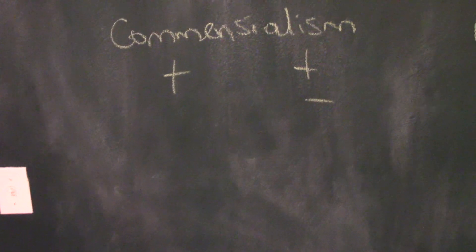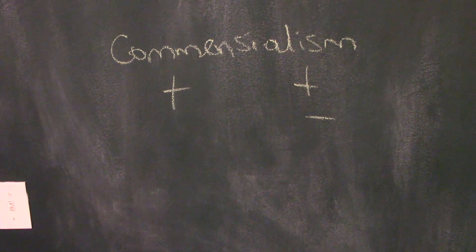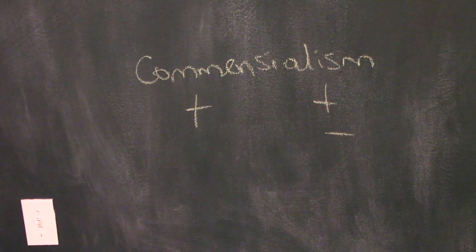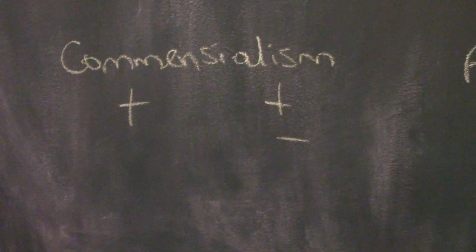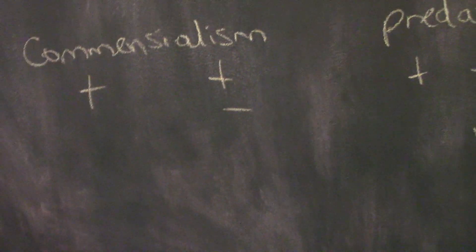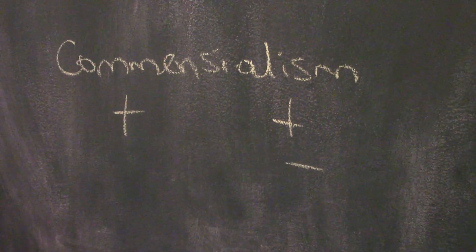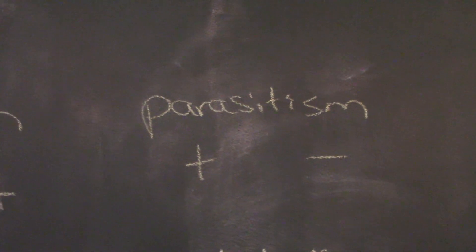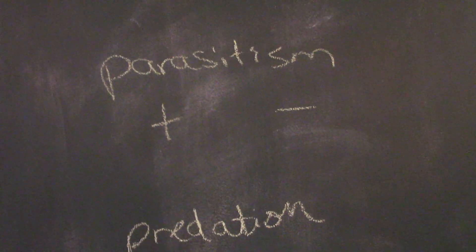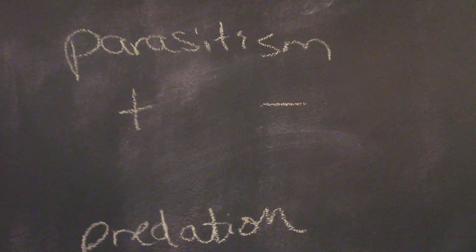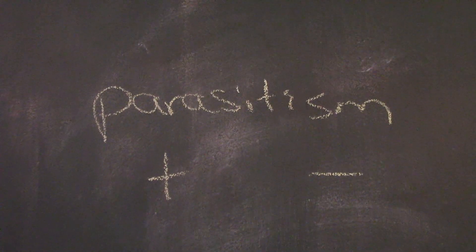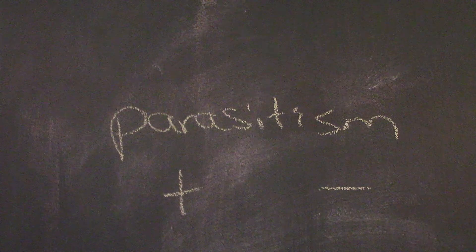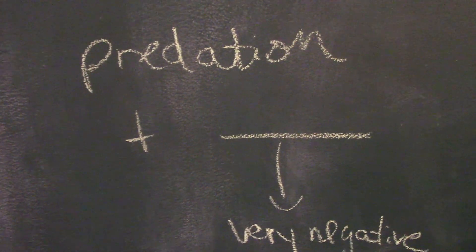Commensalism is where one organism benefits while another is neither harmed nor benefits — a neutral relationship. It's very rare in natural ecosystems because behavior typically isn't frivolous, and many relationships initially thought to be commensalism are actually mutualism. Parasitism is where one organism exploits the resources of another without necessarily killing it — tapeworms, giardia, viruses, bacteria. It's in their best interest to take what they need without destroying the host, because that destroys their mode of transportation. Predation is the ultimate form of parasitism, where you consume the resources of another organism by killing it.